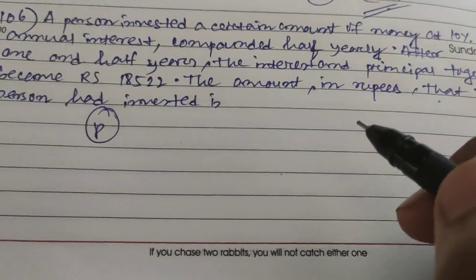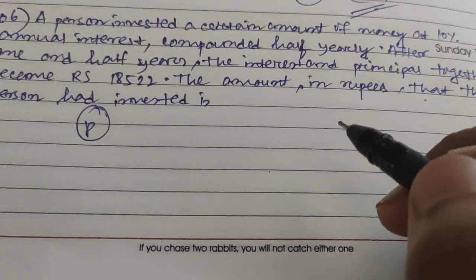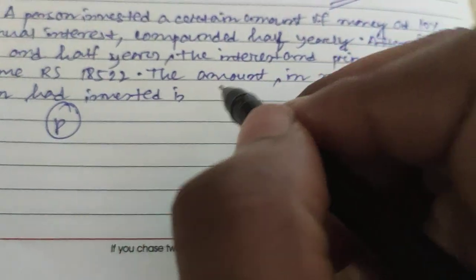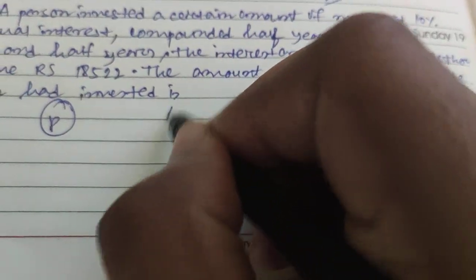amount of rupees. According to the formula of compound interest, after that time period, the amount will become how much?